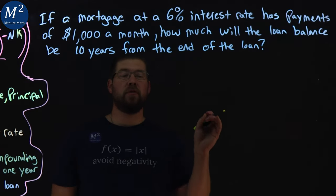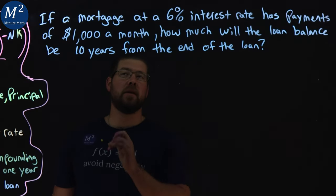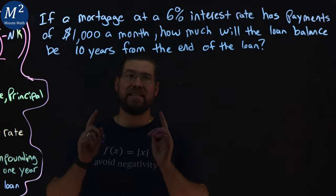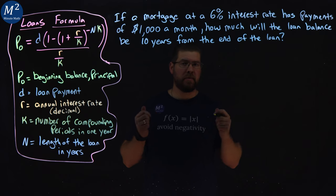If a mortgage at 6% interest rate has payments of $1,000 a month, how much will the loan balance be 10 years from the end of the loan? Let's learn.